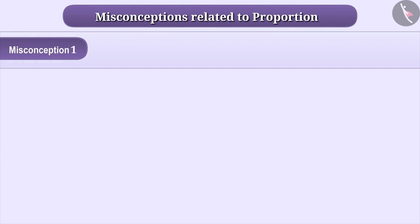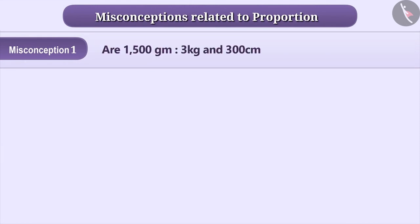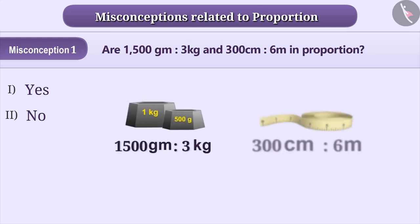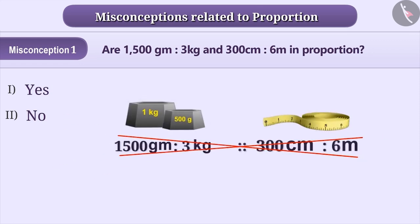Misconception 1: Are 1500 grams is to 3 kg and 300 cm is to 6 m in proportion? Some students misunderstand that the ratios of two different quantities cannot be in proportion. In the given situation, they think that the ratio of weight and distance cannot be in proportion.